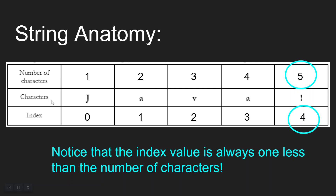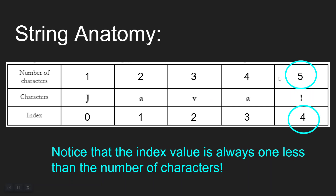So, string anatomy. Here is our string right here - Java with its exclamation point. Counting the number of characters, there are five characters in this string, so it has a length of five. It's also important to note that each individual character has an index, and the index starts counting at zero. So the index values are zero, one, two, three, and four. The index value of each character in a string is always one less than the number of characters.